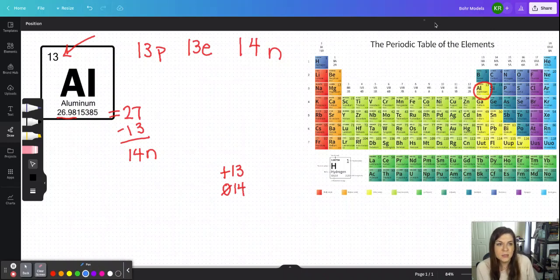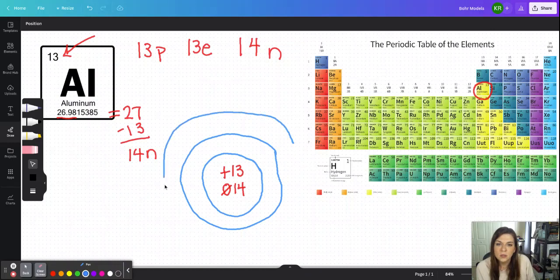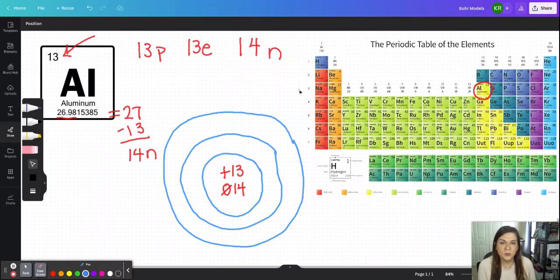So I will do that drawing real quick. We have our 13 protons, which are positive. We have 14 neutrons, which are neutral. And then because aluminum is in the third period, I will need to have three rings, or three layers of electrons here. So there's one. There's two. And there is three. So now I'll have to take those 13 electrons and distribute them across the three energy levels that we have here.